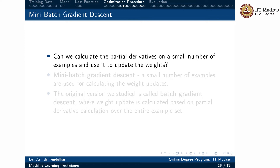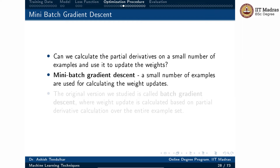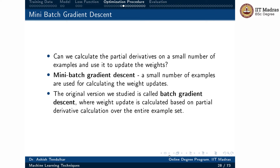The question is: can we calculate the partial derivative on a small number of examples and use it to update the weights? Mini-batch gradient descent exactly does that — it uses a small number of examples for calculating the weight updates. The original version is called batch gradient descent, where the weight update is calculated based on partial derivative computation over the entire example set. In mini-batch, instead of the entire training set, we use a small number of examples at a time to compute the weight update.